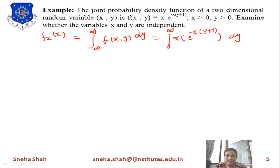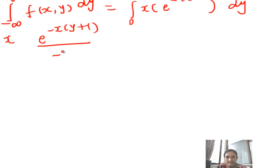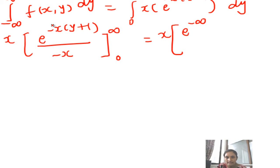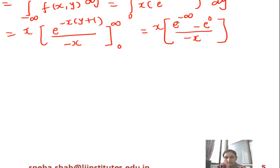Substituting f(x,y): f_X(x) = ∫₀^∞ x·e^(−x(y+1)) dy. Here x is common and taken outside. The integral of e^(−x(y+1)) with respect to y gives e^(−x(y+1)) divided by (−x), evaluated from 0 to ∞. Simplifying: x cancels with the (−x) denominator; e^(−∞) = 0 and e^0 = 1, giving − (0 − 1)/(−1) = 1. So f_X(x) = 1.